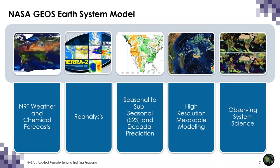The Goddard Earth Observing System, or GEOS, Earth System model is a global model designed to function seamlessly across many different scales and applications. Today we'll talk about GEOS real-time atmospheric analyses and forecasting and long-term atmospheric reanalysis. GEOS is also used to produce seasonal forecasts, study climate variability and change on decadal scales, and can be run at very high resolution using Observing System Simulation Experiments, or OSSEs. GEOS is developed and maintained by the NASA Global Modeling and Assimilation Office, or GMAO.